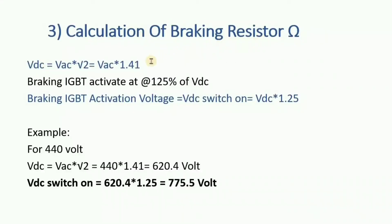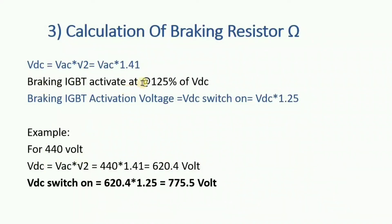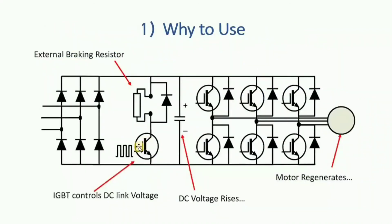Now let's calculate the ohms of the braking resistor. First we calculate the VDC of the drive using the formula: VDC = VAC × √2. The braking IGBT activation level is at 125% of VDC. For example, with a 440V AC input: VDC = 440 × 1.41 = 620.4V. The switch-on level is 125%, so 620.4 × 1.25 = 775V. This is the voltage at which the IGBT gets triggered for braking.